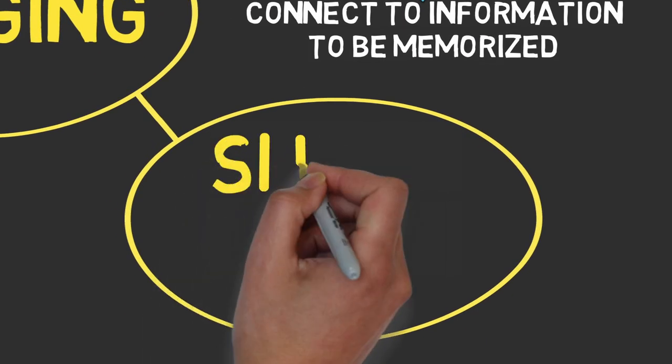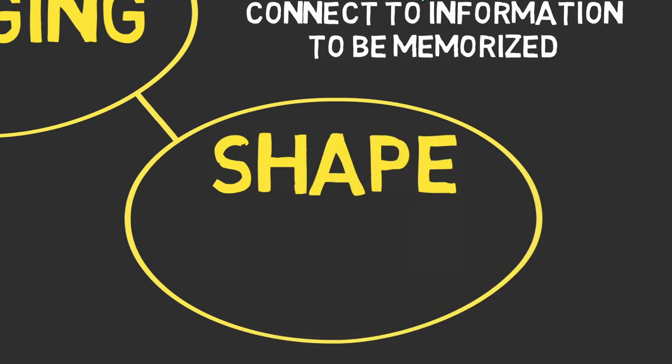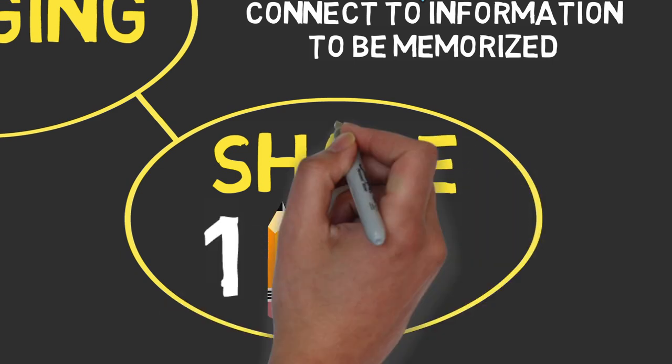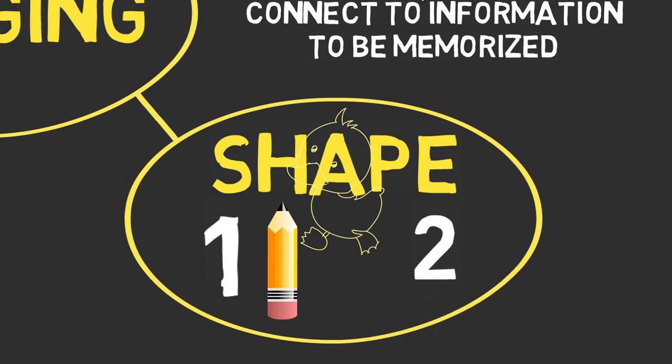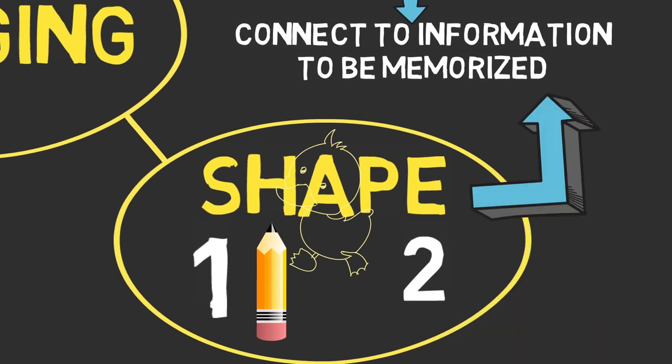Next, the shape method. Imagine objects that are shaped like numbers, such as a pencil for one and a duck for two. And then use those objects to make connections to information you want to memorize.